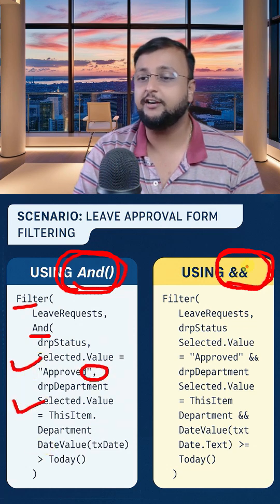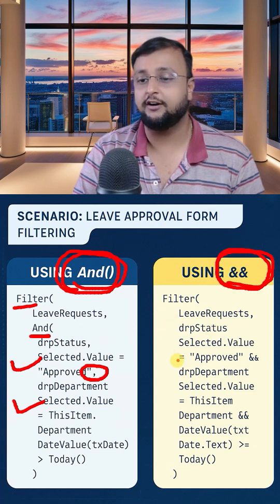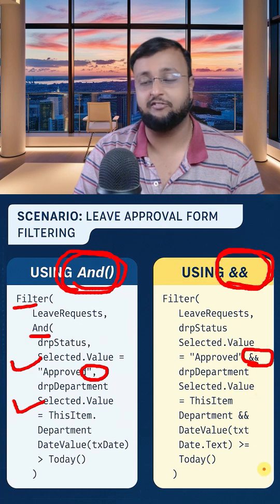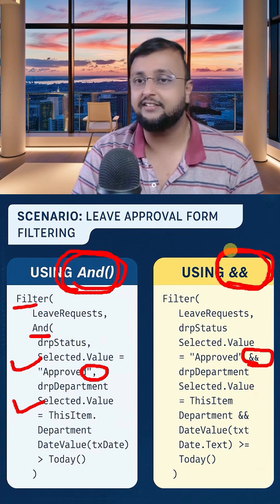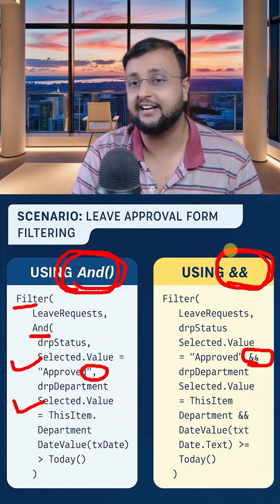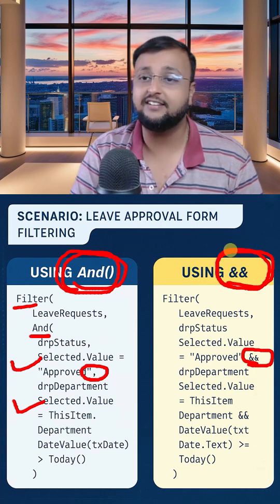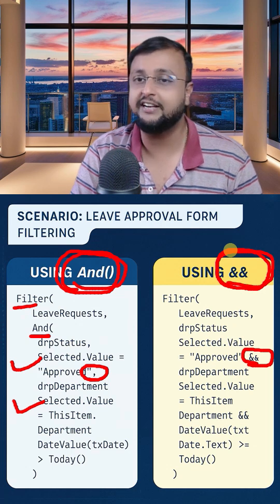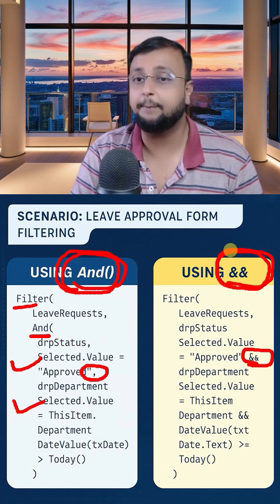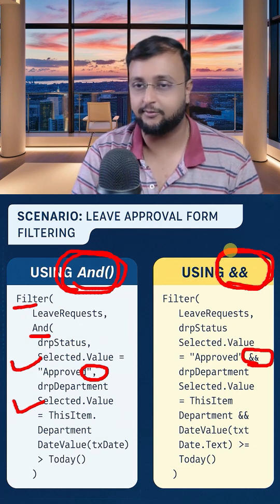But when you are using double ampersand (&&), you just need to use the && operator in order to append conditions one after another. It's just a matter of how you as a developer are writing the condition. It has nothing to do with performance — ultimately it will give you the exact same result with no impact on performance.